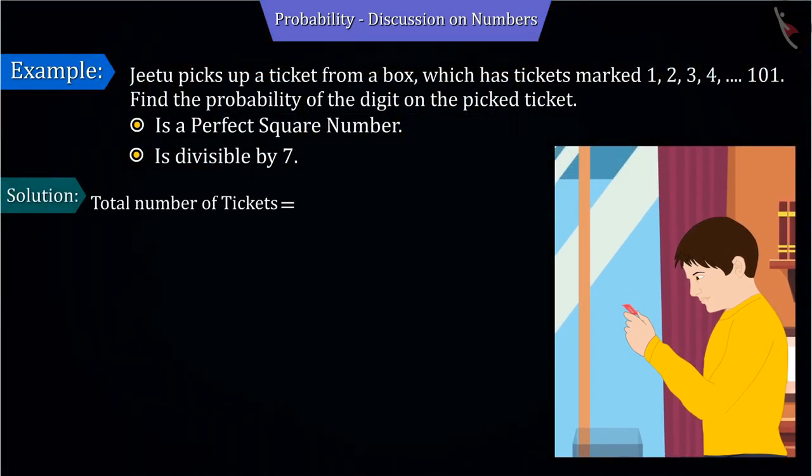Given that there are a total of 101 tickets in the box, the number of total possible outcomes is 101.